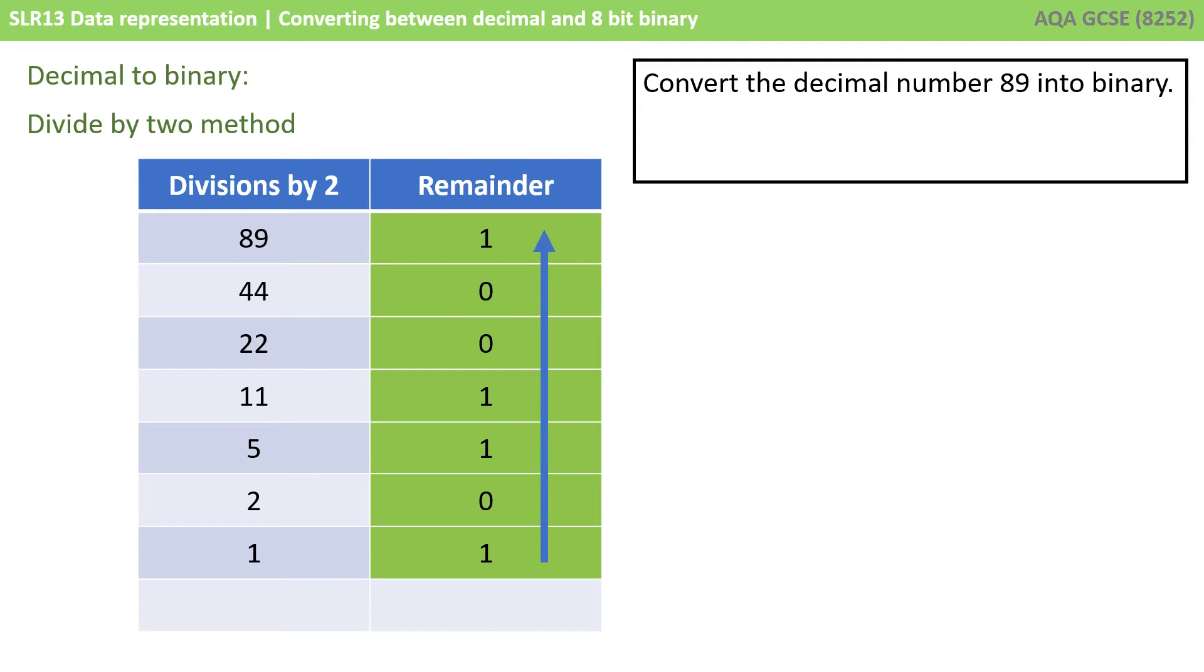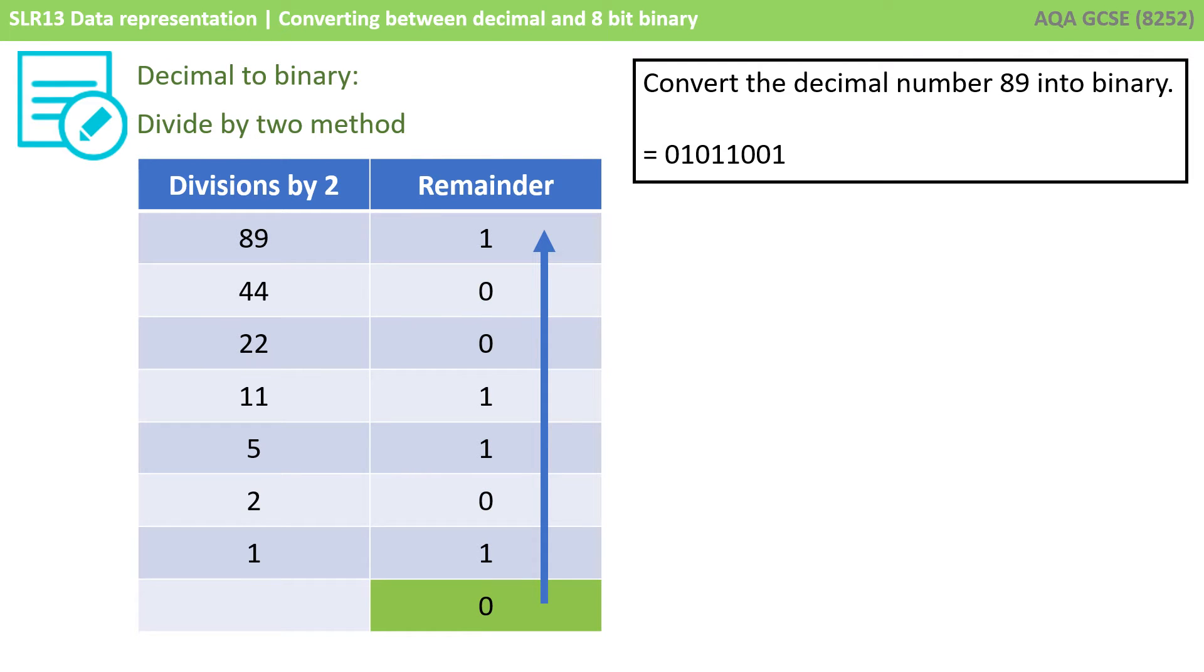You then simply read the remainder column from bottom to top. So the decimal number 89 in binary is 01011001. You will note I added an extra 0 onto the beginning and this isn't strictly needed. But a lot of the times at GCSE you'll be expected to give your answer in 8 bits. And in this case you can add any leading zeros that you need to pad it out.